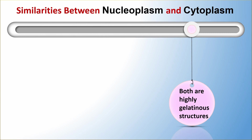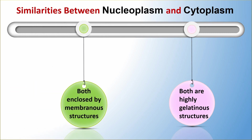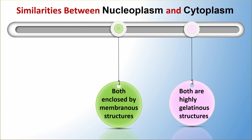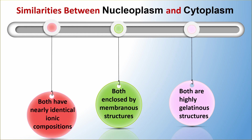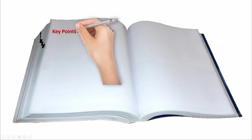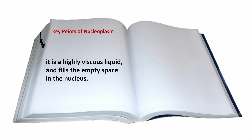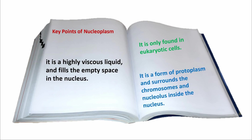Similarities between nucleoplasm and cytoplasm: both are highly gelatinous structures, both are enclosed by membranous structures, and both have nearly identical ionic compositions. Key points of nucleoplasm: it is a highly viscous liquid that fills the empty space in the nucleus; it is only found in eukaryotic cells; and it is a form of protoplasm that surrounds the chromosomes and nucleolus inside the nucleus.